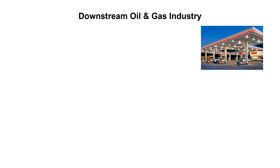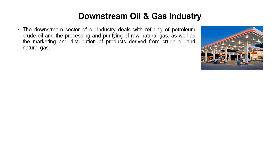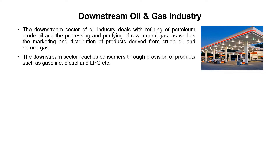The downstream oil and gas sector deals with refining of petroleum crude oil and the processing and purifying of raw natural gas, as well as the marketing and distribution of products derived from crude oil and natural gas. The downstream sector reaches consumers through products such as gasoline, diesel, and LPG. Some famous companies in this category include Total, PSO, Shell, and BP.